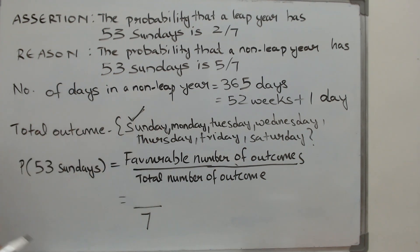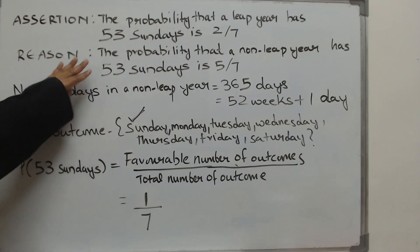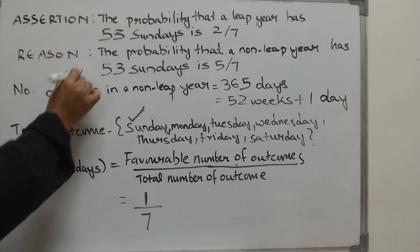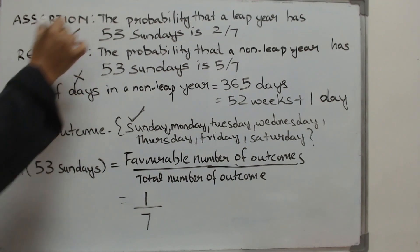This is the only favorable outcome that you see. So it is 1 by 7. So this statement here is not correct. The first statement is correct.